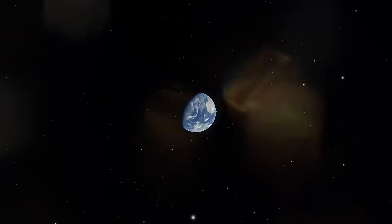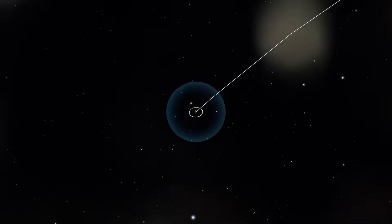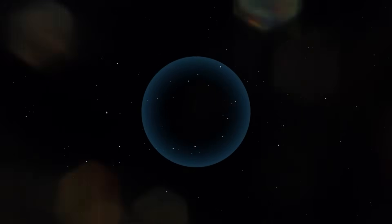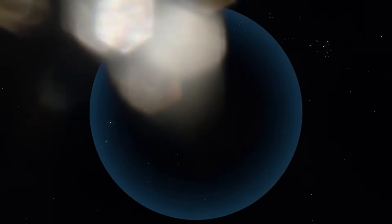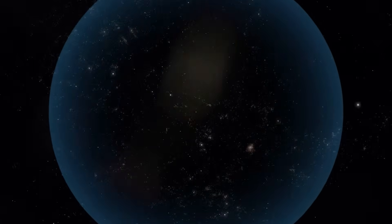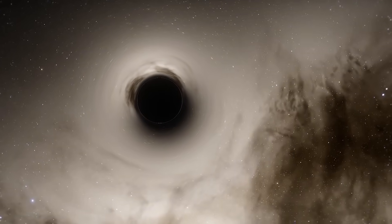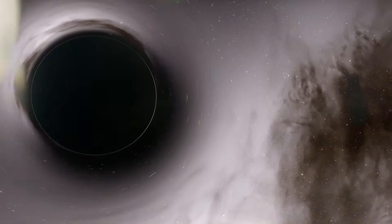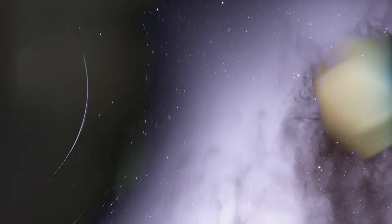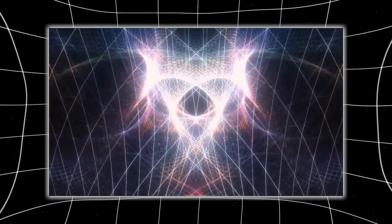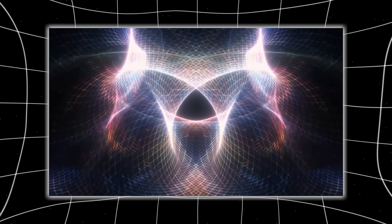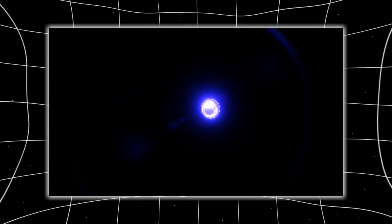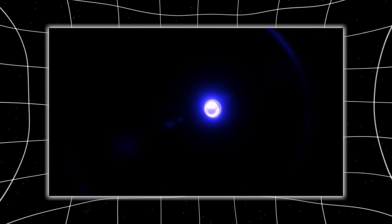For decades, dark matter has been the unseen scaffolding upon which all our cosmic structures were built. It's invisible, undetectable through light, and yet it was always assumed to be there. A mysterious substance making up nearly 85 percent of all matter in the universe. But the James Webb telescope's early images are throwing a wrench into that framework. The galaxies it's detecting appear to be forming and evolving at rates that would require far more dark matter than current models allow.